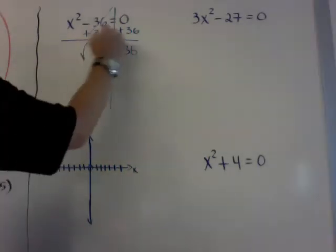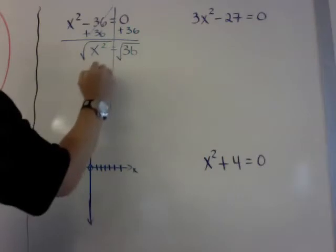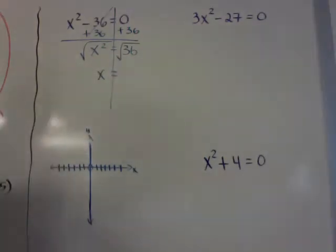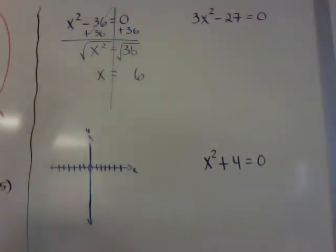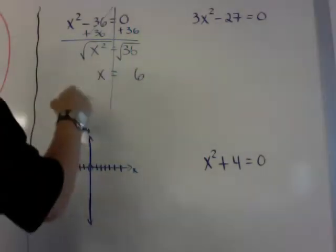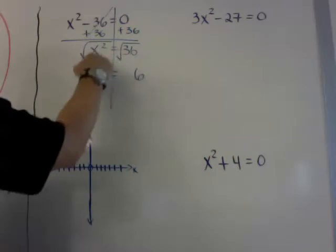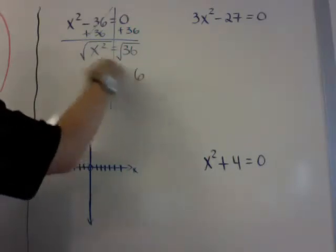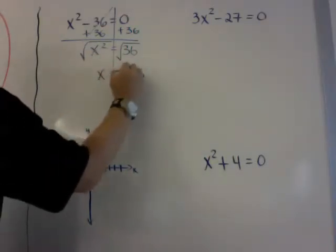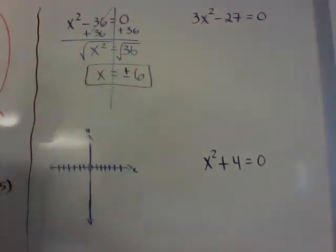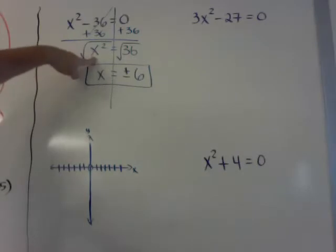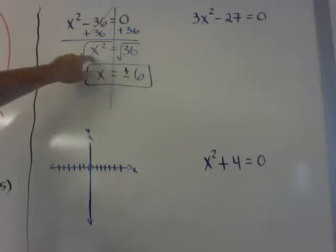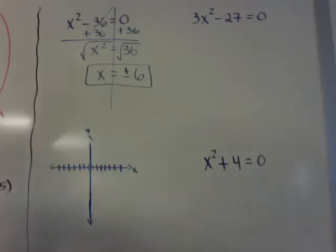In order to get x by itself, I need to take the square root of both sides. And when you take the square root, I'm finding what is the square root of 36? And most people would just put 6. But the answer is actually, what times itself would equal 36? 6 times itself would equal 36, but negative 6 will also equal 36. So your answer would be plus or minus 6. So whenever you're finding square root of x² equals square root of 36, it's going to be plus or minus 6.